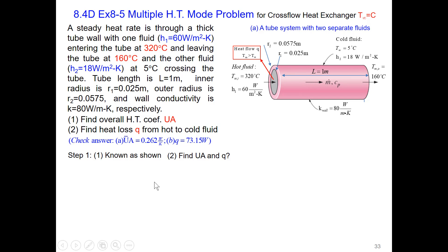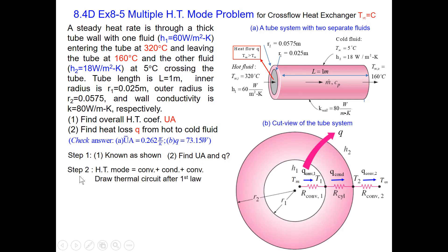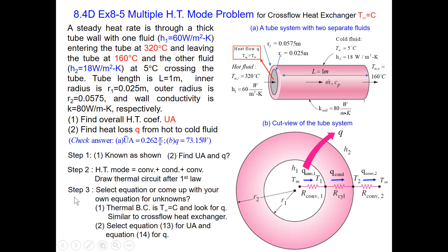Step 1: this is what we know and what we are looking for. Step 2: identify all heat transfer modes. This is the cut view of the tube system. There is convection between internal flow and inner tube surface, conduction within the cylindrical wall, and convection between outer tube surface and external flow. Next, we draw the thermal circuit. Step 3: select the equation or come up with our own equation for unknowns. At this point we are not sure which way to go, so let us go back and check our problem one more time.